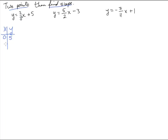I'm going to pick another nice easy value — something that'll get rid of that three in the denominator. If I stick three in there, I get y equals two-thirds times three plus five. Two-thirds times three is two, so I get seven. So the point three, seven.